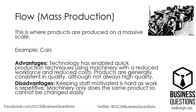Flow or mass production is where products are produced on a massive scale. One prime example is cars. The advantages are that technology has enabled quick production techniques using machinery with a reduced workforce and reduced costs.